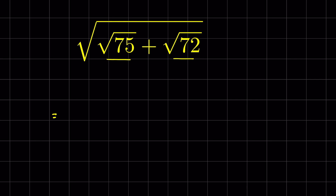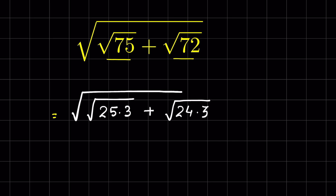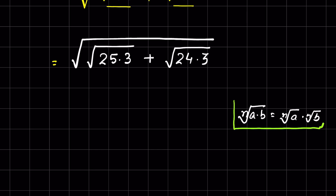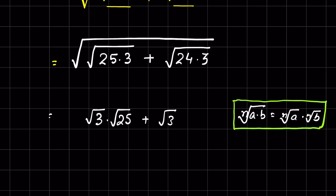Square root of 75 can be written as √(25×3), and square root of 72 can be written as √(24×3), all under a square root. Using the property that the nth root of (a×b) equals the nth root of a times the nth root of b, we can write this as √3×√25 plus √3×√24, all under a square root.